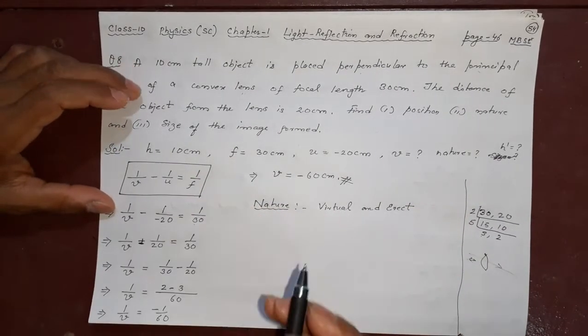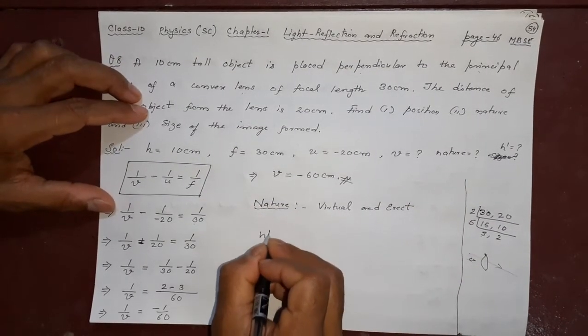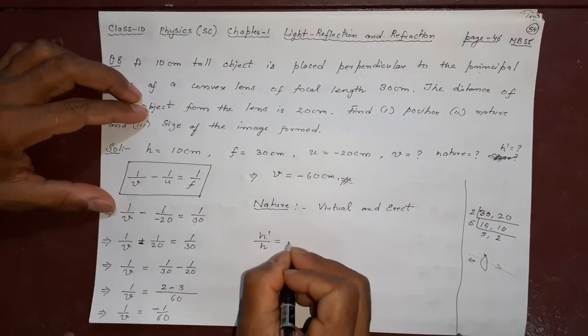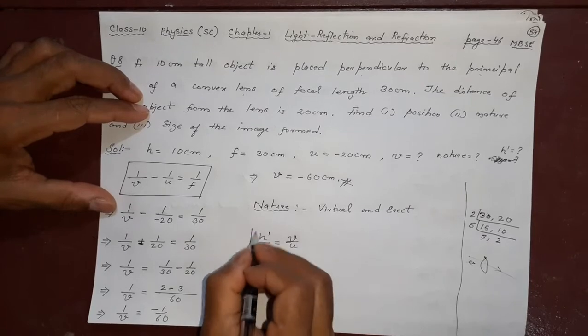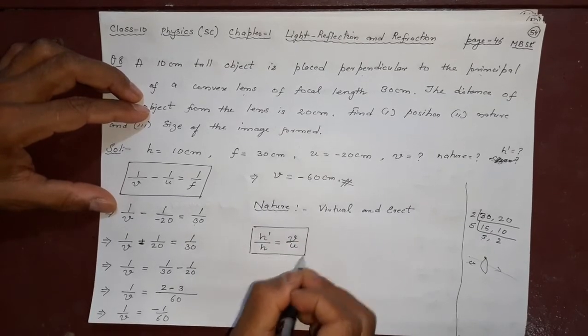You will write virtual and erect. Remember, virtual is always erect. Now what is the size of the image formed. So h dash by h equal to v by u simply. This is for the lens, there is no minus sign.